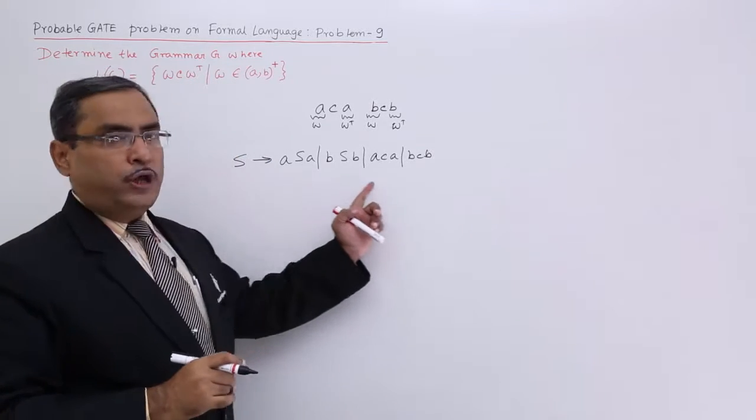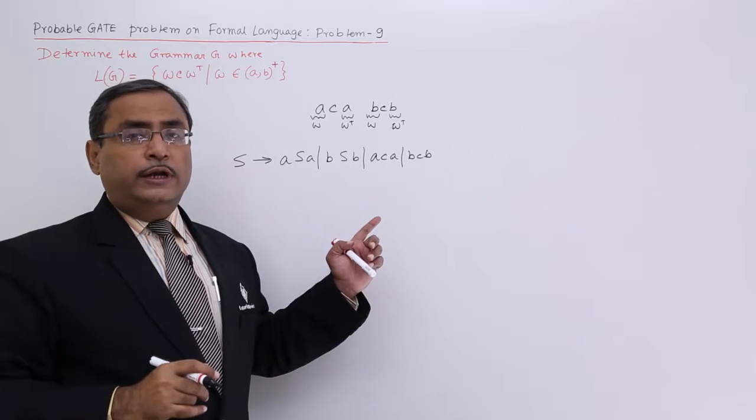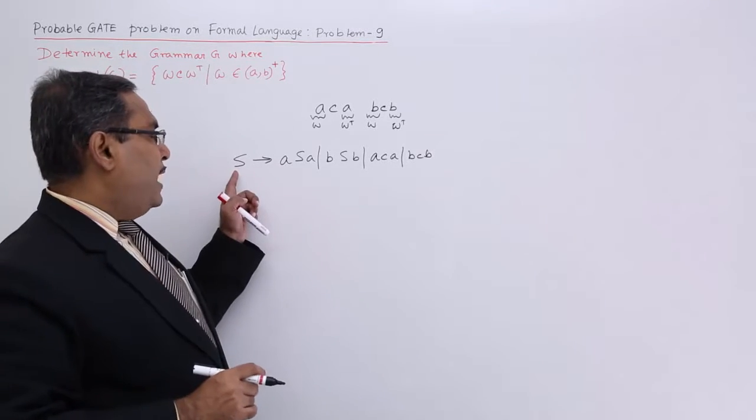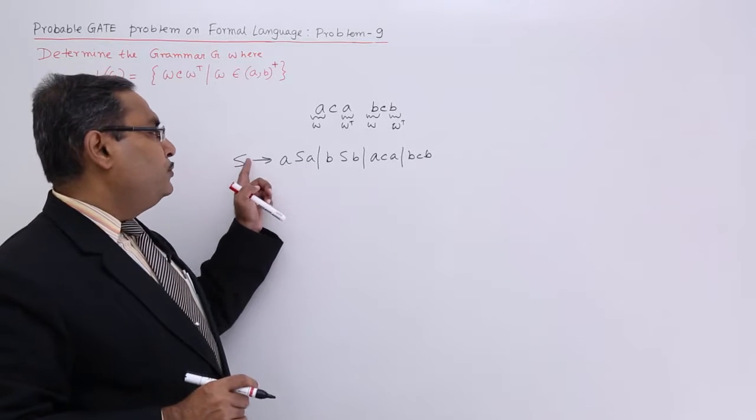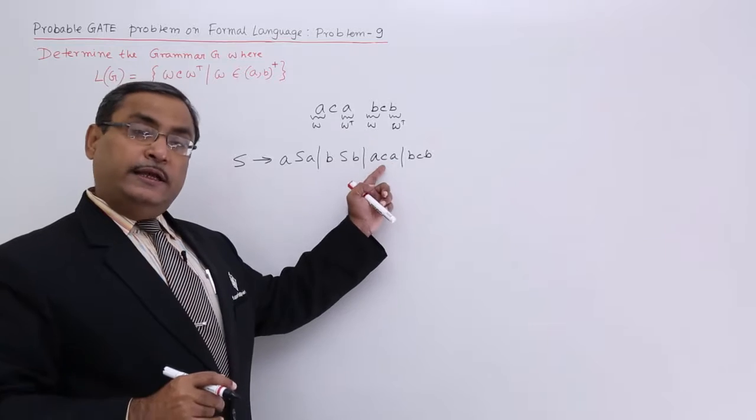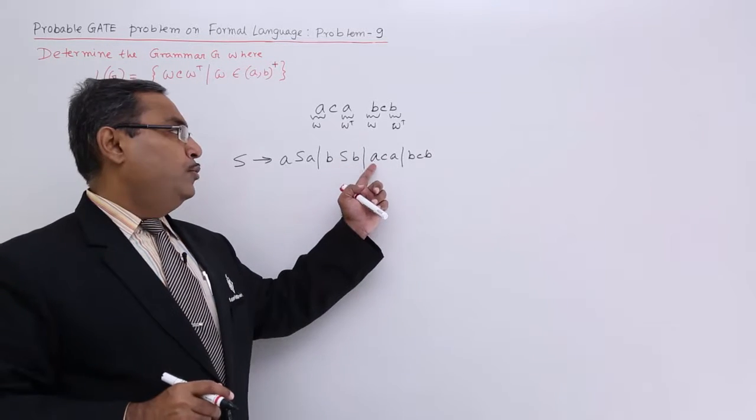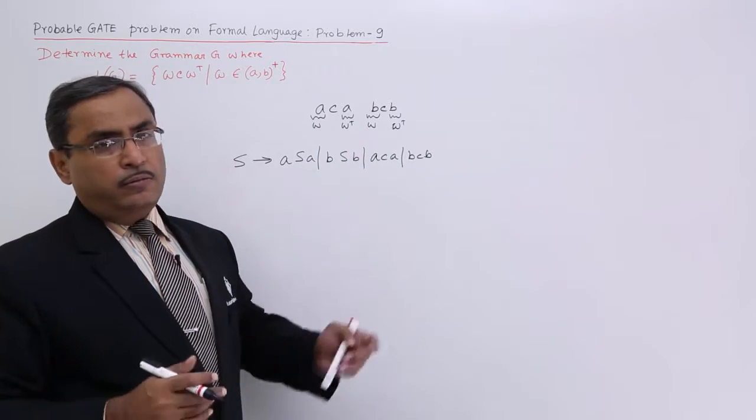That is my productions. I cannot make any string containing only one C, it is not possible because if you apply this production rule for the first time that means, S produces A, C, A then also A will be there and another A will be there as W and W T as I have discussed here. Now let us write the grammar.